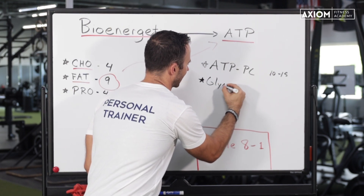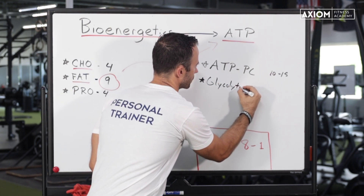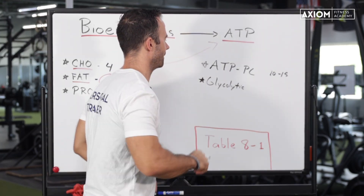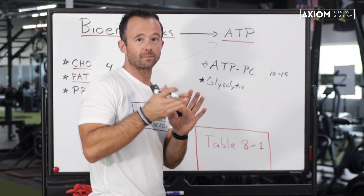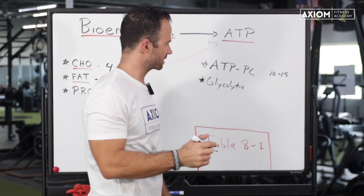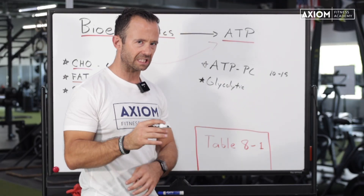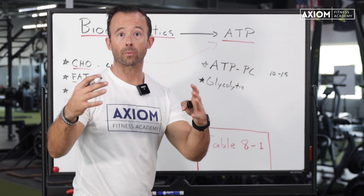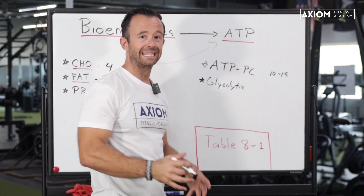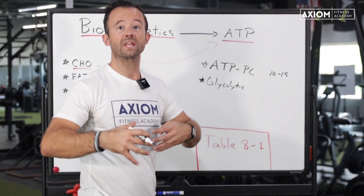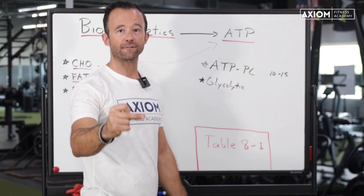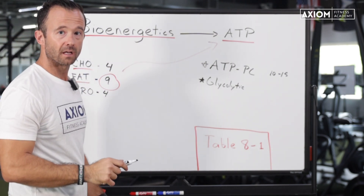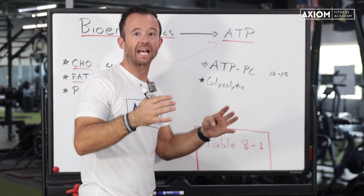As the ATP-PC is being used up, our next energy system — the glycolytic — is already kicking in. Glycolytic is going to be that next most immediate fuel source. If you see the word glycolytic, you probably think glucose, glycogen, carbohydrates. This is where our body, especially anaerobically without oxygen, can get fuel pretty quickly from carbohydrates, but we don't get as much as we do from the next energy system, our third — the oxidative.